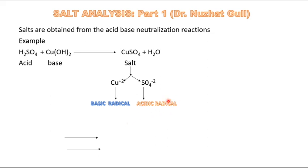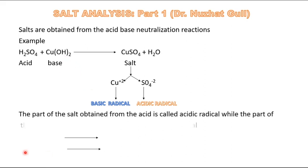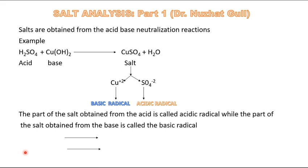Because of this reason, we classify these ions as acidic radicals and basic radicals. As the name suggests, the acidic radical is obtained from the acid and the basic radical is obtained from the base. The part of the salt obtained from the acid is called the acidic radical, while the part obtained from the base is called the basic radical.